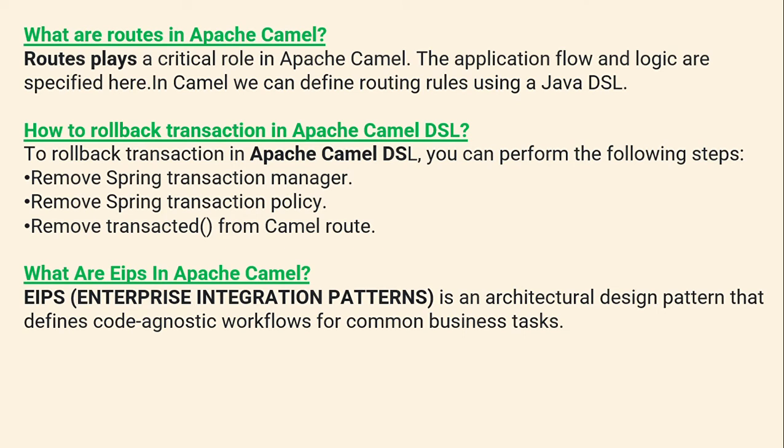What are EIPs in Apache Camel? EIPs — Enterprise Integration Patterns — are an architectural design pattern that defines code-agnostic workflows for common business tasks.